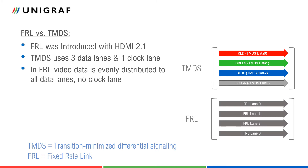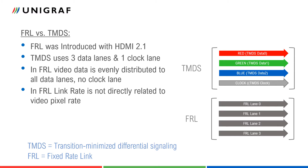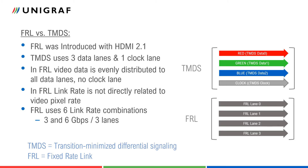FRL transports data differently. Video data is evenly distributed to all data lanes and clock information is embedded in the link data. The link speed principle is also different: in FRL, the transmission link rate is not directly proportional to video pixel rate. FRL uses six link rate combinations. Three and six gigabits per second uses three lanes, while six, eight, ten, and twelve gigabits per second uses four lanes.